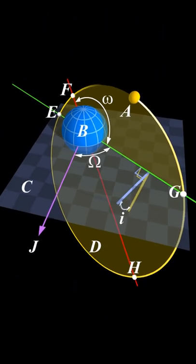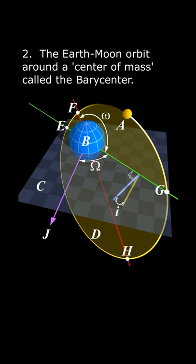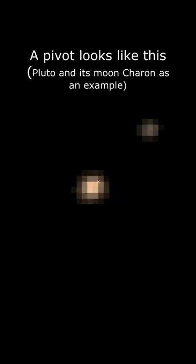The earth-moon system orbits around the center of mass between the two bodies. Earth pivots around this point every lunar month.